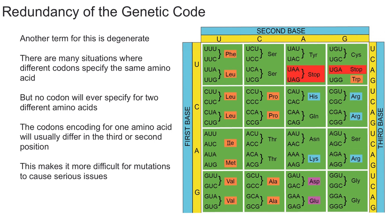If the third position changes but the amino acid remains the same, that's called a silent mutation. To summarize: the redundancy of the genetic code means that different codons can specify the same amino acid, but no codon will ever specify two different amino acids. This is helpful to prevent mutations from becoming really harmful.